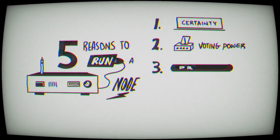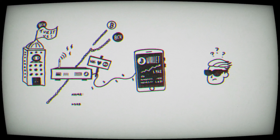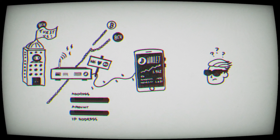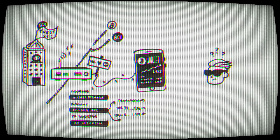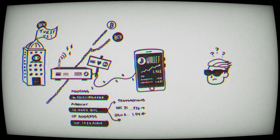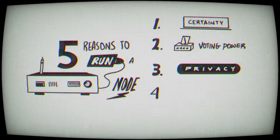The third reason is privacy. When you're using another node, they can track your data, including your transactions, your addresses — even your IP address can be linked to you in some way or another. Using your own node, you can have the privacy and security of not sharing this with anybody else. It does come with some responsibility because there are privacy trade-offs when you run your own node if you don't do it properly.